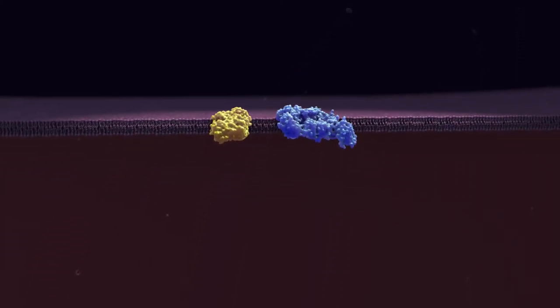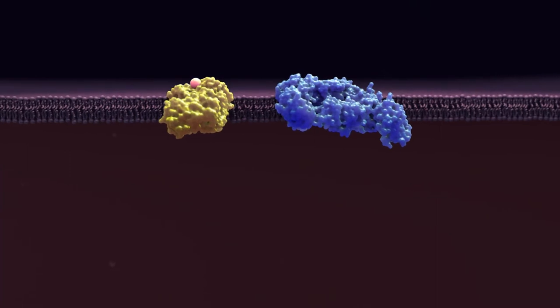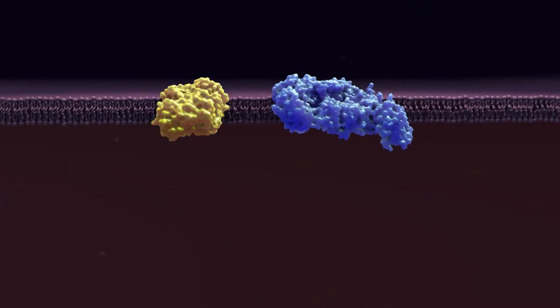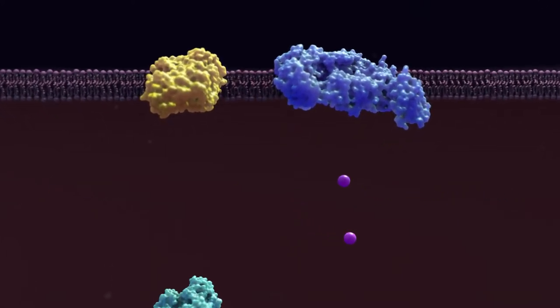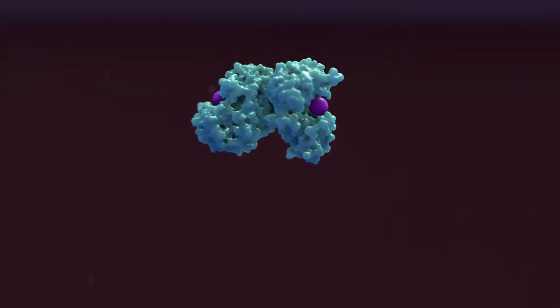Iron not bound within the labile iron pool or ferritin will be transported across the basolateral membrane. Ferroportin-1 transports ferrous iron out of the cell. Iron is oxidized by hephaestin and binds to apotransferrin for transport in the portal circulation.